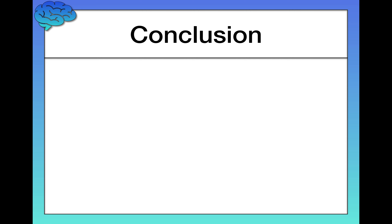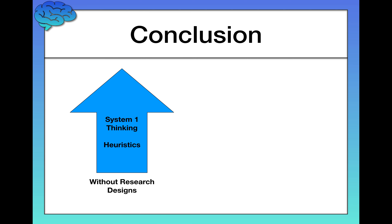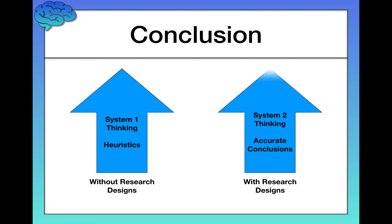Here's the conclusion and the point: without research designs, we see a great increase in system one thinking and reliance on heuristics. In contrast, with research designs, it forces you to rely on system two thinking, which leads to more accurate conclusions about the world.